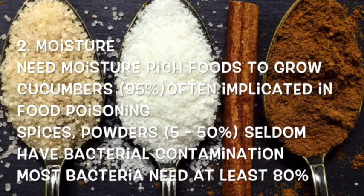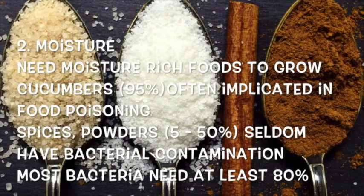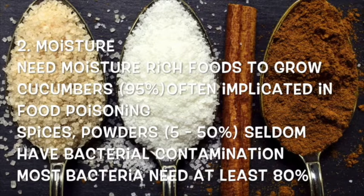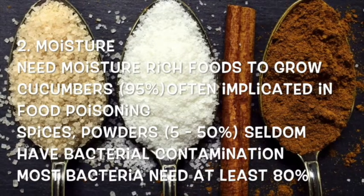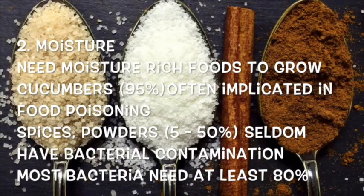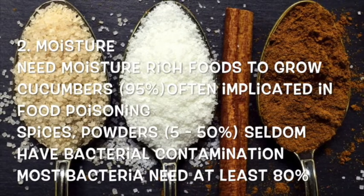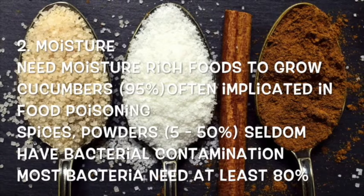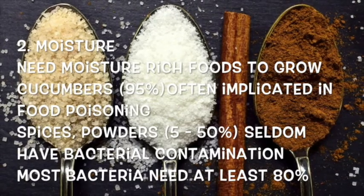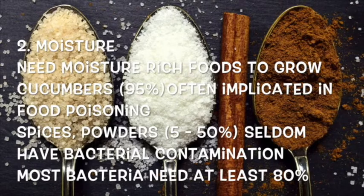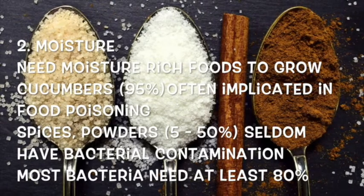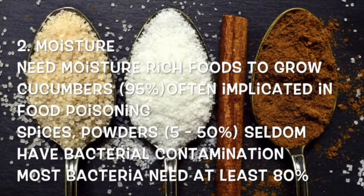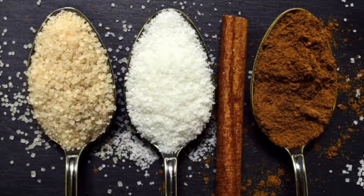Let's take a look at moisture, or what is known as water activity. Bacteria can grow mostly in moisture-rich environments — in food, bacteria love moisture-rich conditions. Water activity means how much water is available in a food product. For example, cucumbers, lettuce, and celery are roughly about 95% water, compared to dried spices, which are between 5% and 50% water. Most bacteria need at least 80% water to be able to survive.